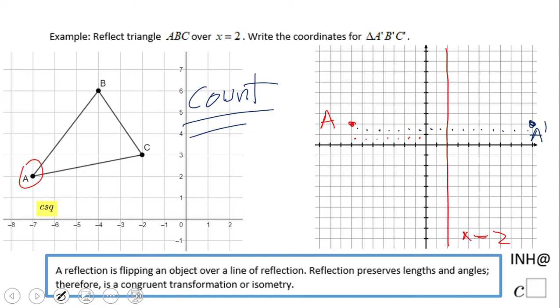6. So 1, 2, 3, 4... 1, 2, 3, 4, 5, 6. Right here, this is point B, and we're going to reflect it.